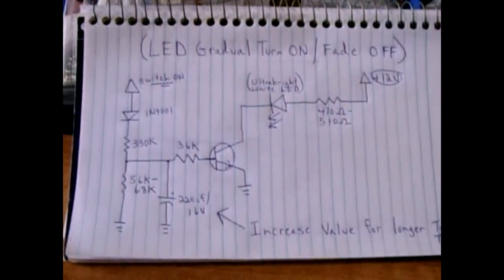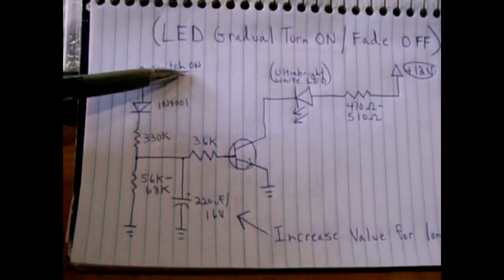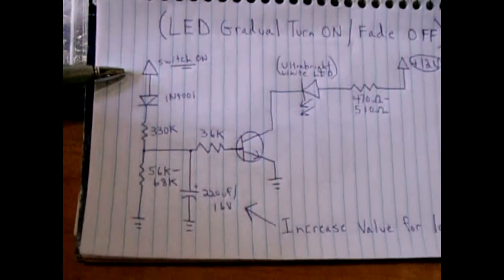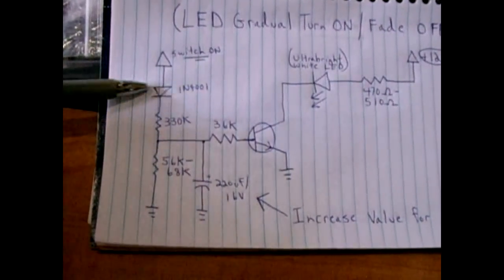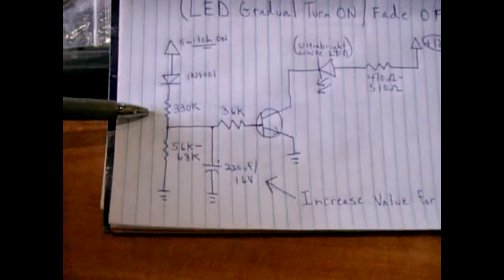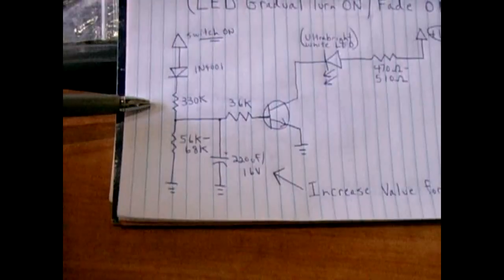I'll go over the circuit first. The switch power connects to the circuit connecting to a 1N4001 diode flowing into a 330k ohm resistor.